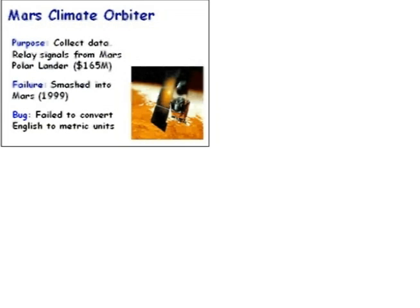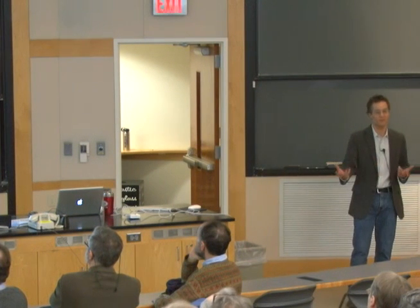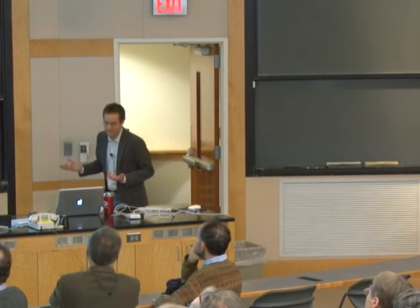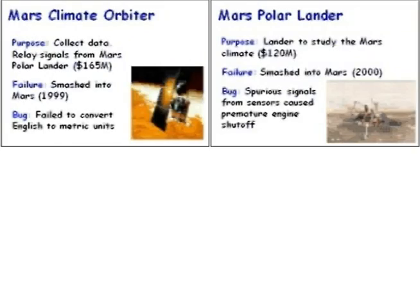This is the Mars Climate Orbiter. It was supposed to orbit Mars and relay signals from the Mars Polar Lander. It smashed into Mars. Why? Somewhere in the source code, a programmer forgot to convert an English unit to a metric unit — forgot to convert inches to millimeters. As for the Mars Polar Lander, it also smashed into Mars. While descending through the atmosphere, spurious signals from the sensor caused it to think it was already on the surface, and it shut its engine off too early.